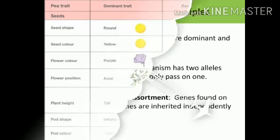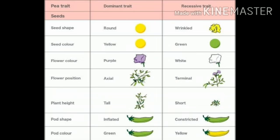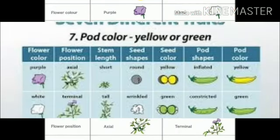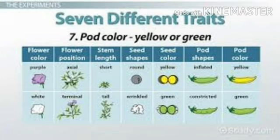Next is the seven characters of the pea plant chosen by Mendel for his crosses. There are dominant traits and recessive traits. Dominant traits are those which can express themselves, and recessive traits are those which cannot express themselves. The seven characters are: flower color, flower position, stem length, seed shape, seed color, pod shape, and pod color.